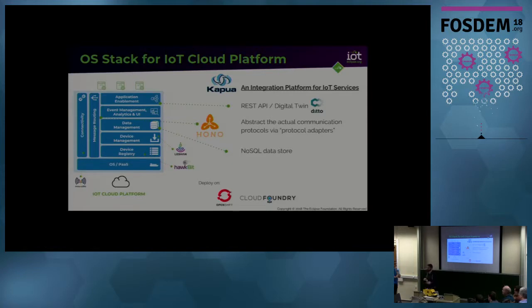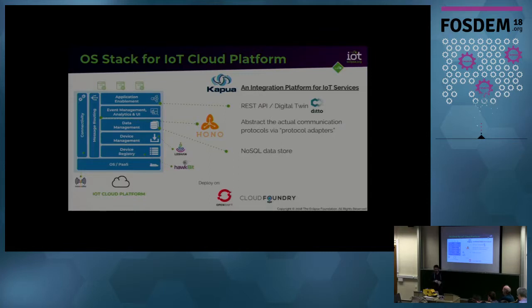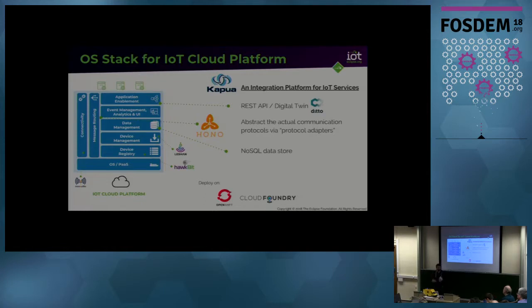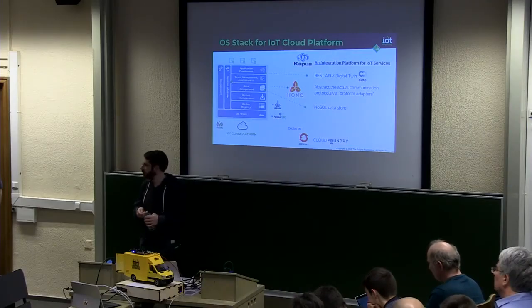Question about modeling ownership relations for devices and data. I don't think any current Eclipse project does that directly. Eclipse Vorto might be the closest — it allows you to have models describing the capabilities of devices, and you could combine that with other models describing hierarchy of ownership, then map that to roles in Kapua. But it's not a solved problem yet in the Eclipse ecosystem.